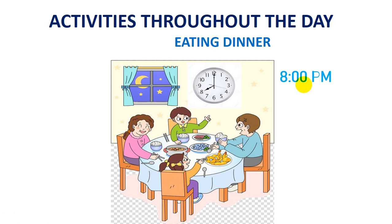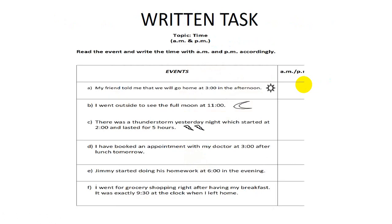So this is all about AM and PM. You will be given a written task — you will have to write these in your notebook and write the time with AM or PM. For example, my friend told me that we will go home at 3 in the afternoon. In the afternoon, as you all know by now, we use PM, so you will write 3 PM. I hope you understood this lesson. Take care and Allah Hafiz.